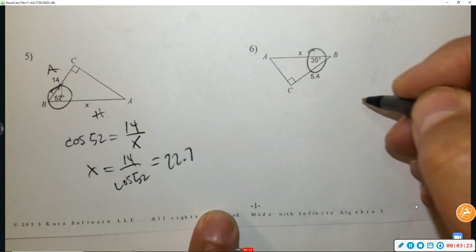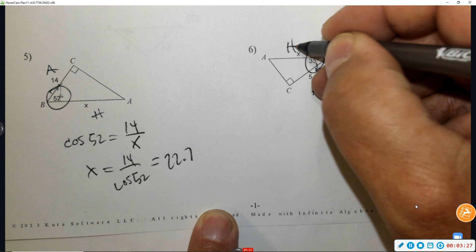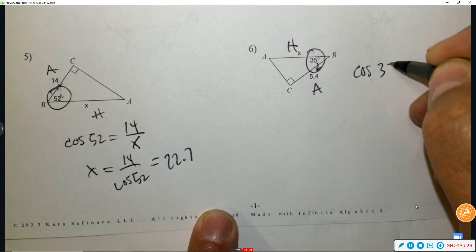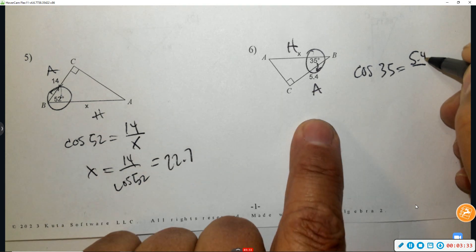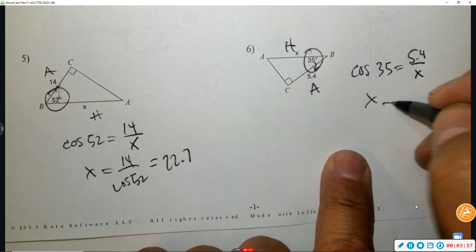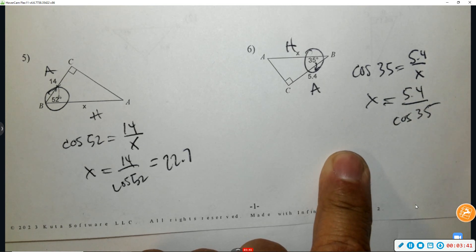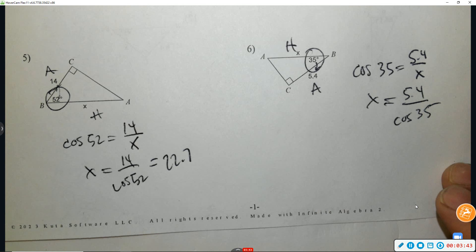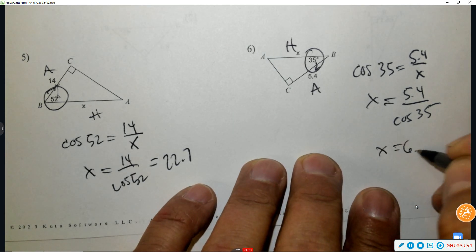Number six: circle the angle — we have adjacent and hypotenuse, so again that's cosine. Adjacent is 5.4, the hypotenuse is x. Trade places, use your calculator. You get 6.6 if you round properly.